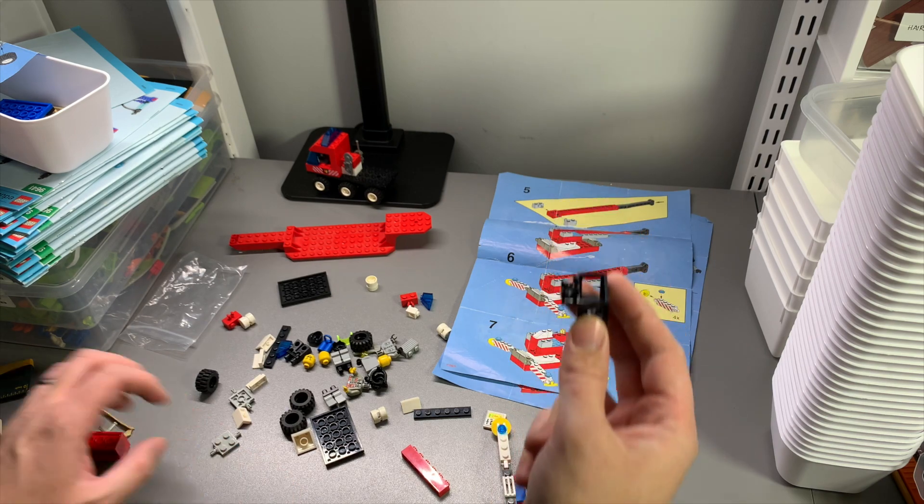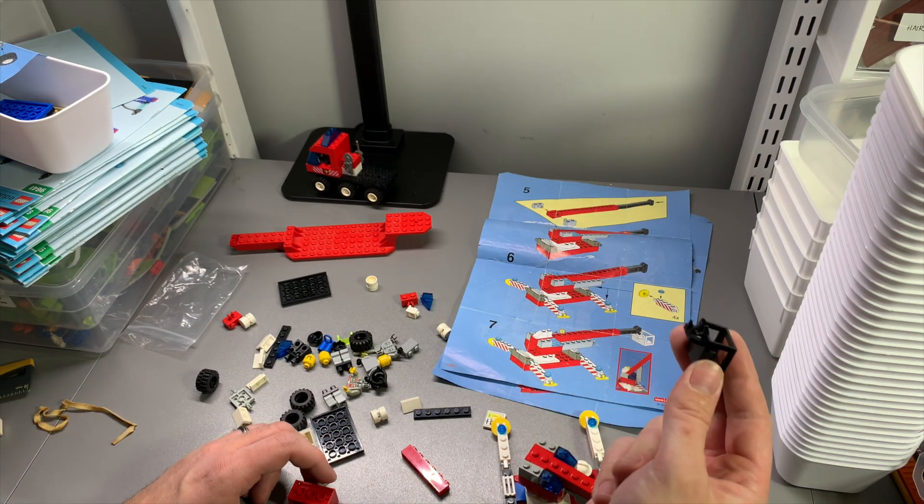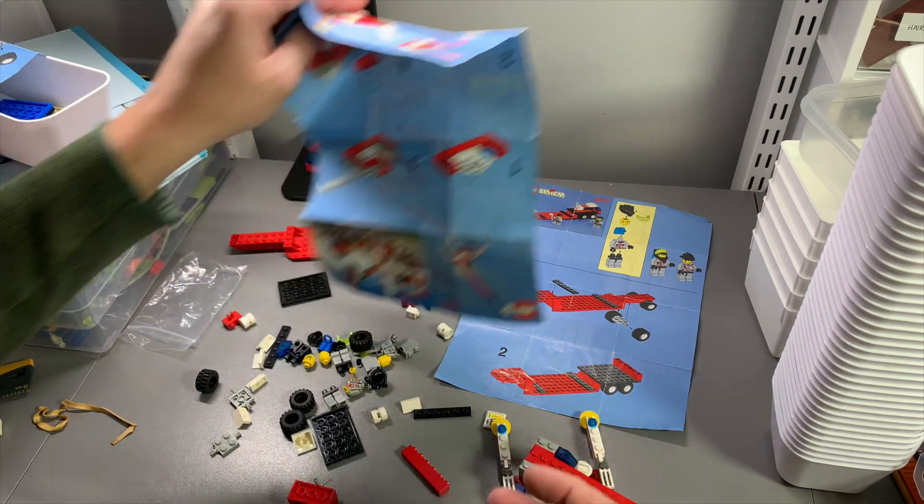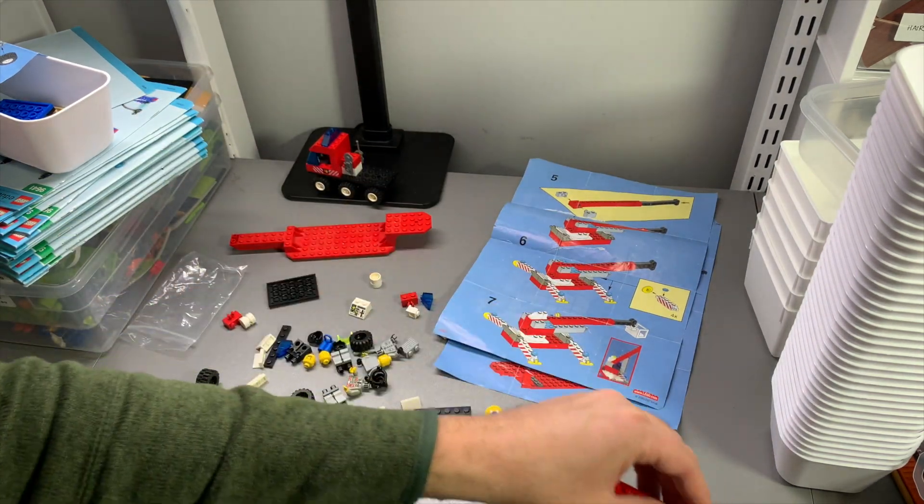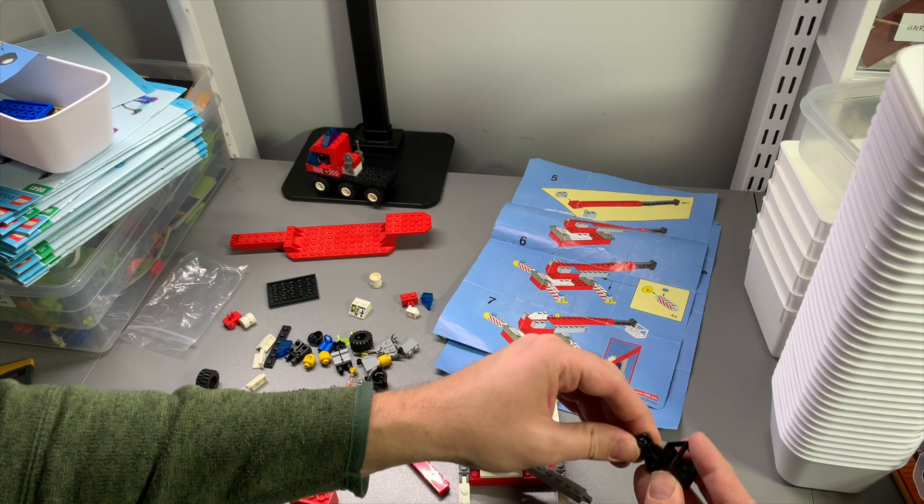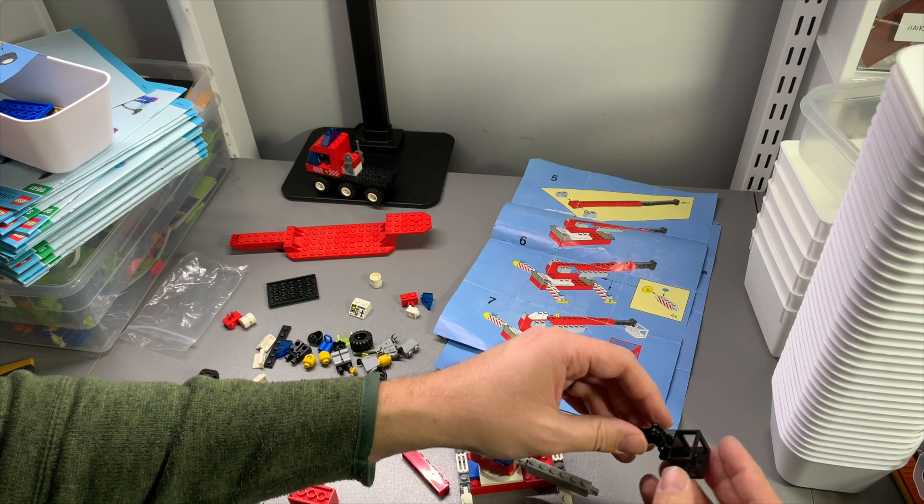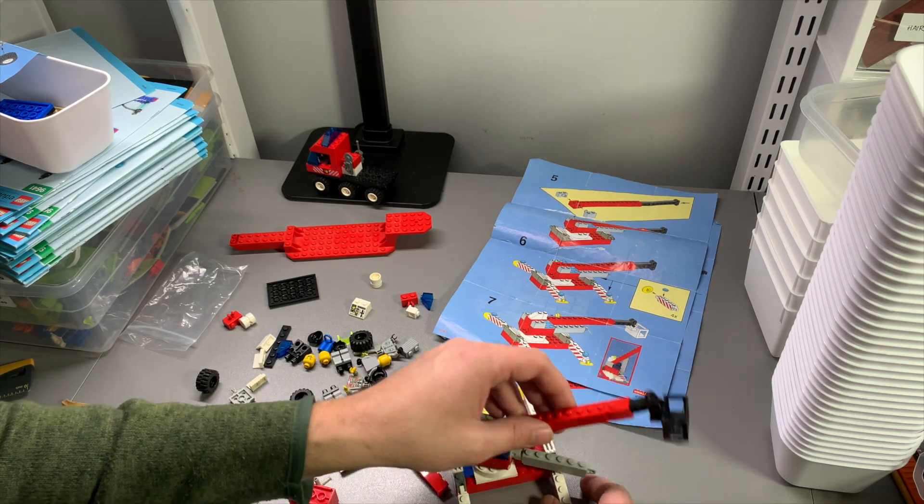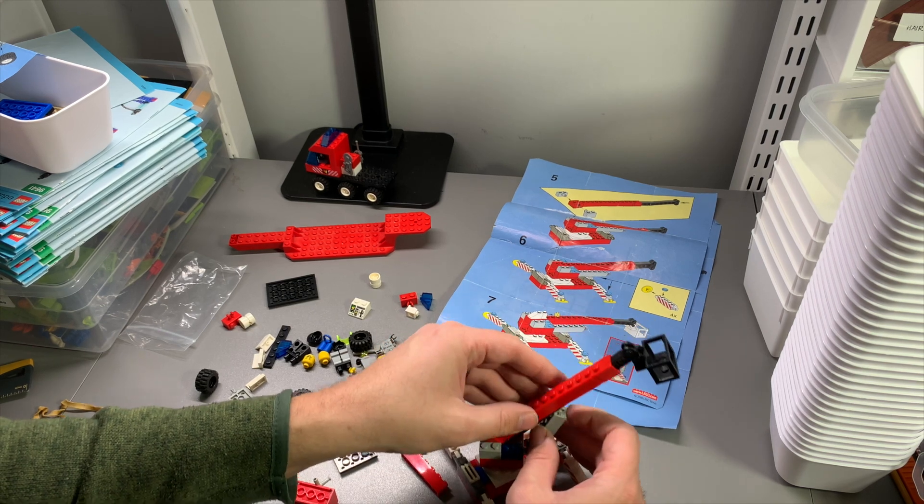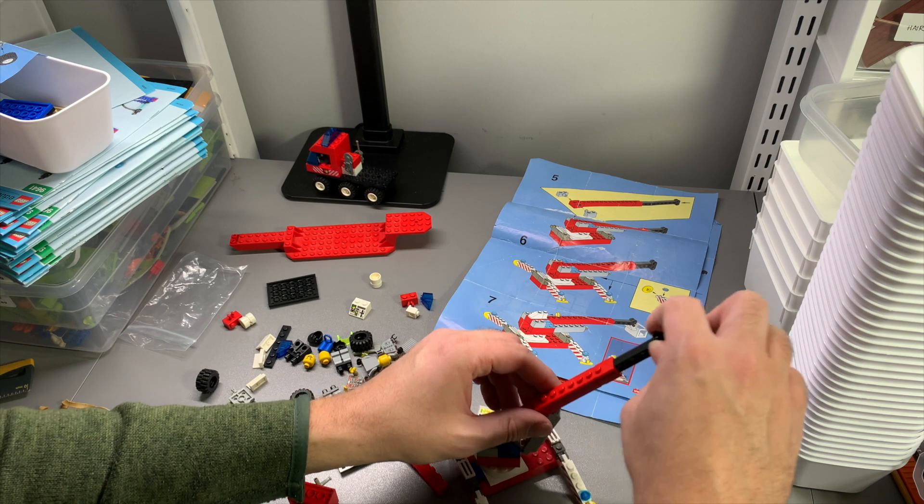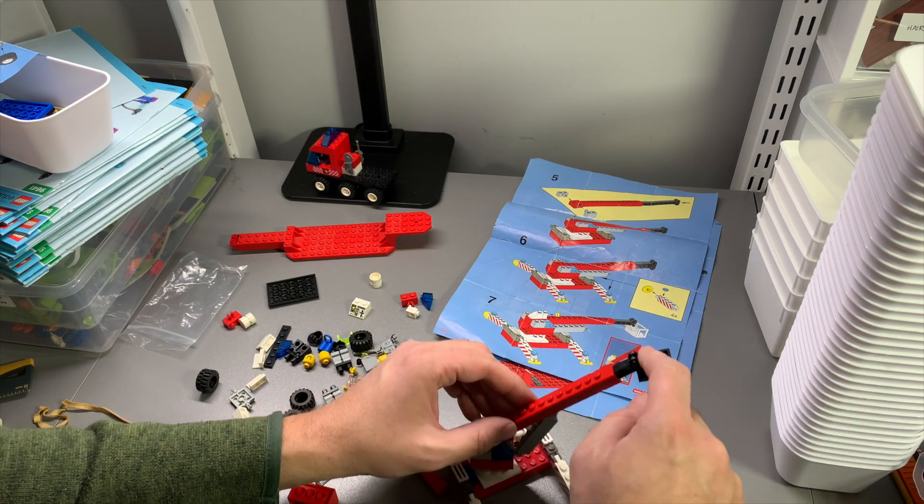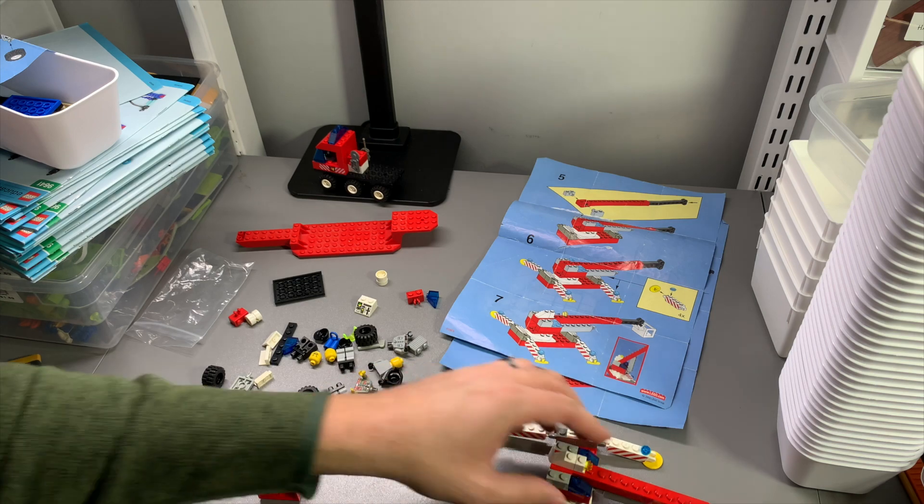It doesn't have the white basket. It has a black basket. What's this? Well, that's okay, I suppose. And then this goes like this to hold it up. Yep. Okay. That's done.